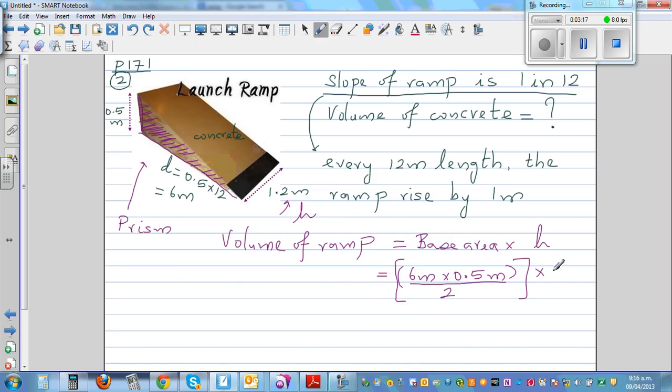Then you times it by the height, which is 1.2 meters. You can do this: 2 goes in 6 three times, so this is basically 3 meters times 0.5 meters times 1.2 meters. Use your calculator and you will find that will be 1.8 cubic meters. The volume of this concrete used in this ramp is 1.8 cubic meters.